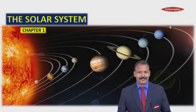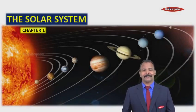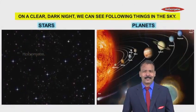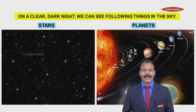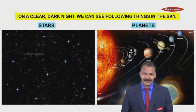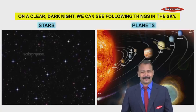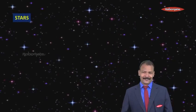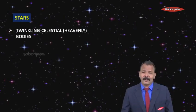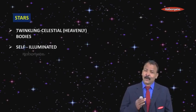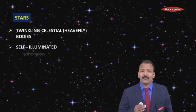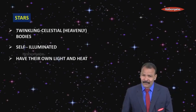Let's learn this interesting chapter, the solar system. Now children, on a clear dark night we can see the following things and they are stars and planets. Now what are these stars? Coming to stars, they are twinkling celestial bodies. The word celestial means they are heavenly bodies. They are also self-illuminated, which means they have their own light and heat.